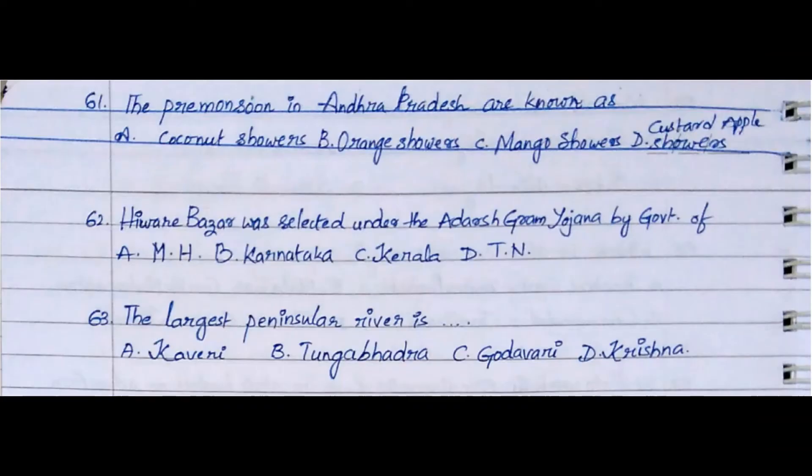Question 61: The pre-monsoons in Andhra Pradesh are known as. Option A. Coconut showers, Option B. Orange showers, Option C. Mango showers, Option D. Custard apple showers. The answer is Option C. Mango showers.